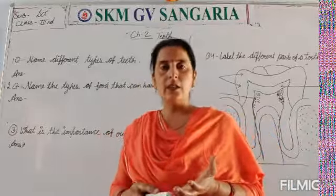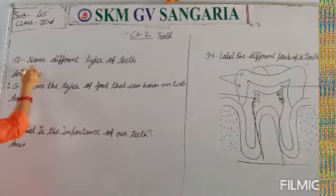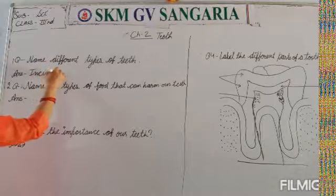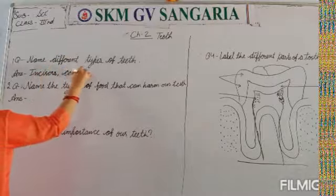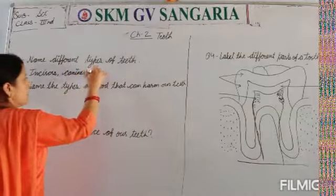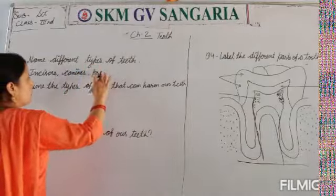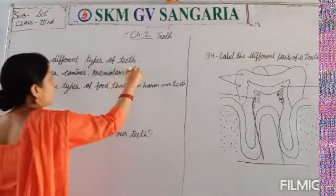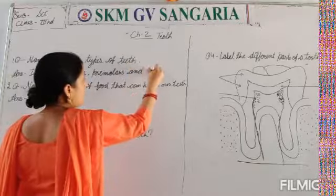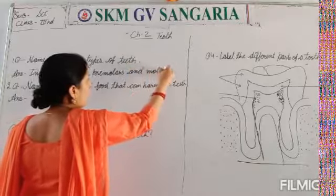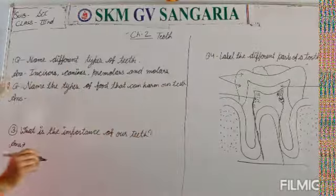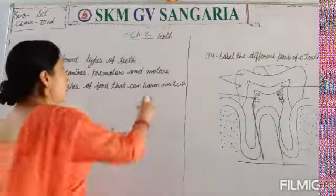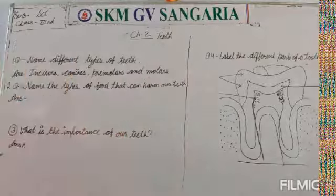So, the different types of teeth are: incisors, canines, premolars, and molars. There are four types of teeth in our mouth: incisors, canines, premolars, and molars.